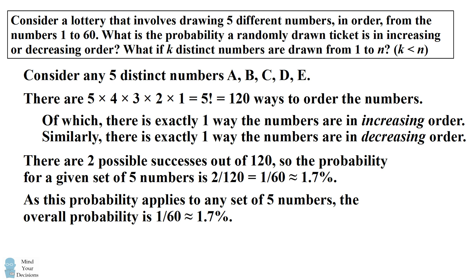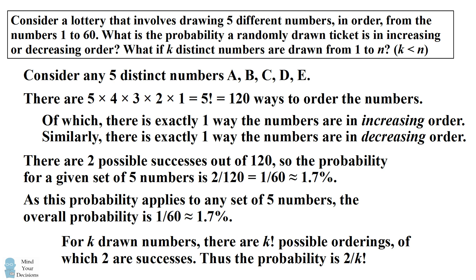Now we can solve the general problem similarly. For k drawn numbers, there are k factorial possible ways to order the numbers, of which two are successes. There's exactly one way to place them in increasing order and one way to place them in decreasing order.